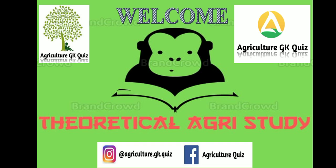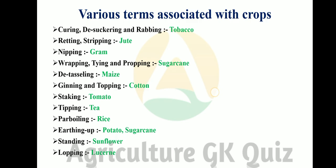Hello, dear friends, welcome to my YouTube channel Theoretical Agri Study. Today we discuss various terms associated with agriculture crops — curing, desuckering, and raabbing in tobacco; retting and stripping in jute; nipping in gram; wrapping, tying, and propping in sugarcane; detasseling in maize; ginning and topping in cotton.